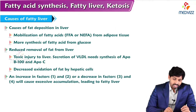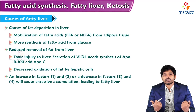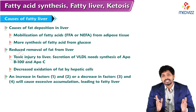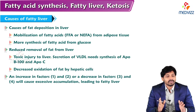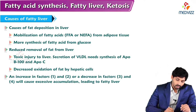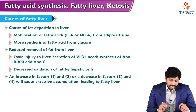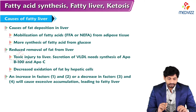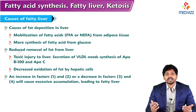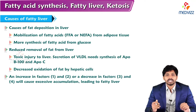The main causes of fatty deposition in liver are: mobilization of fatty acids from adipose tissue, more synthesis of fatty acids from glucose in the liver, and reduced removal of fat from the liver. The main lipoprotein involved in transportation of TAG from liver to other parts is VLDL. If there is any abnormality in making of VLDL and it is not synthesized properly, the lipoprotein cannot carry TAG, hence accumulation of TAG in the liver. Toxic injury to liver, decreased VLDL secretion, decreased synthesis of apoB-100 and apoC, and decreased oxidation of fat by hepatic cells — increases in factors one and two or decreases in factors three and four will cause excessive accumulation leading to fatty liver.